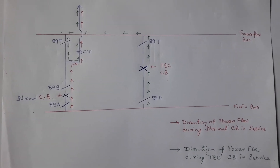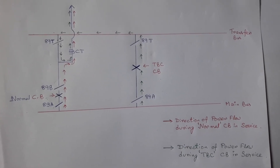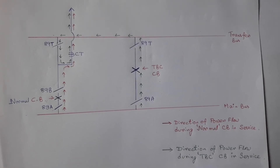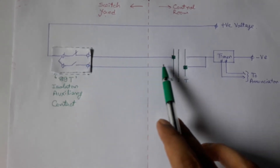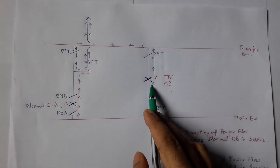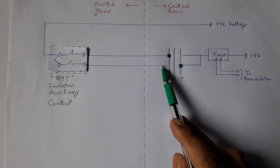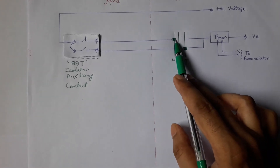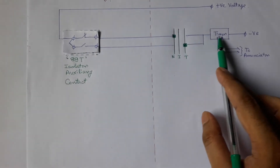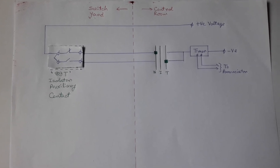But when the normal circuit breaker becomes defective and the load is diverted to the TBC circuit breaker, from the direction of power flow as shown in green, we can see that the 89T isolator is closed or in use. So the contact configuration of this 89T isolator will change, and in this case positive voltage will come to this terminal. When the TBC circuit breaker is in operation, our goal is to trip this TBC circuit breaker only. So we will put this switch in transfer position, and as there is no voltage, there will be no audible annunciation. But if accidentally we put this switch in normal condition, then this positive voltage will actuate the timer and after a predefined time delay, there will be an audible annunciation that something is wrong.